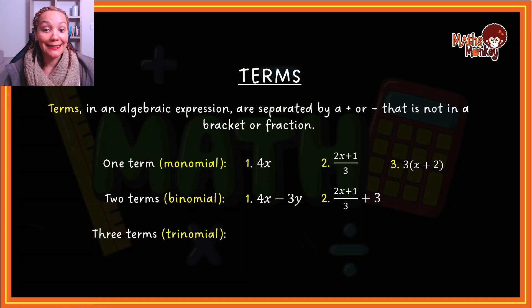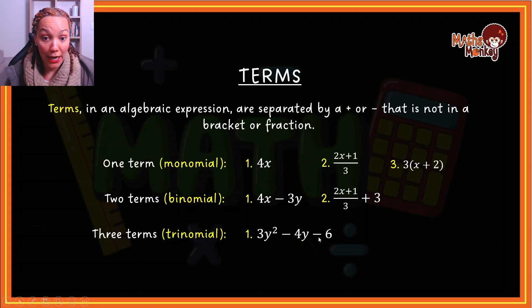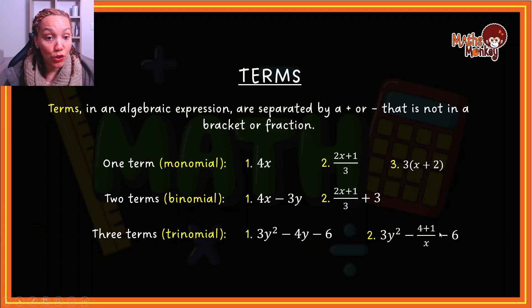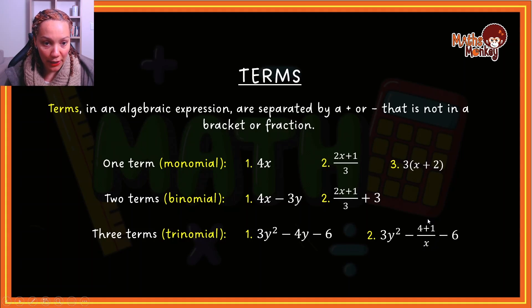Now let's have a look at a trinomial — this is three terms. Terms are separated by pluses and minuses. So if I look at this, I've got two minuses that are not in a bracket and not in a fraction, which means this is a term, this is a term, and this is a term — together I have three terms, so this is called a trinomial. In another example, I've got pluses and two minuses, but one plus is inside a fraction so that doesn't count. So we still end up with three terms total.